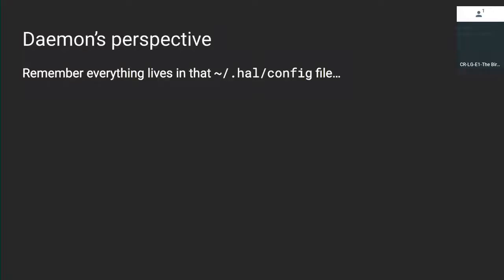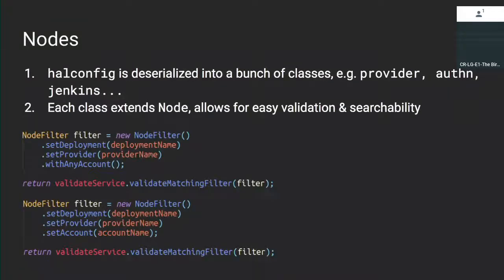From the daemon's perspective, everything lives inside that one hal-config file as a centralized declarative description of your Spinnaker deployment. Everything in there falls into a bunch of classes, each supplying hooks to make it easy to search and validate across these nodes. You basically construct filters and it's easy to go across all your Spinnaker configuration to make sure that configuration in the service will work correctly. All these things are validated holistically.